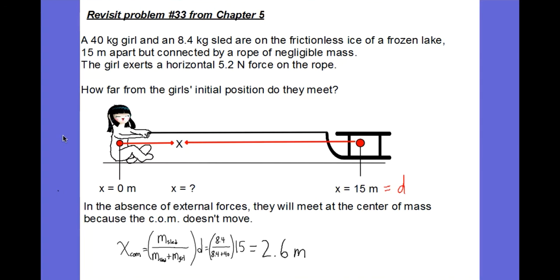And there are no external forces of friction because it is a frictionless surface. So, in the absence of any external forces, they're going to meet at the center of mass because their center of mass will remain in the same place the entire time, since there are no external forces to move it. So, our equation for calculating the center of mass from the girl's position is the mass of the sled over the total mass times the distance between them. And we come up with 2.6 meters, which is the same answer we got back in Chapter 5. Now, we can use our equation for center of mass to find out that they meet at a distance 2.6 meters from her initial starting place.